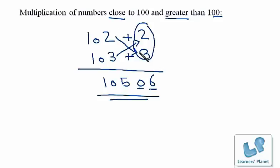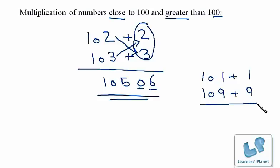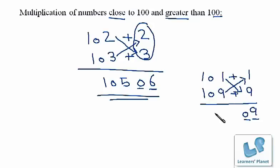Isn't it easy, friends? You just need to pay attention, learn what to do, and then practice to master this. Now let us take another example: we will multiply 101 with 109. This is plus 1 and this is plus 9. Now 9 into 1 is 9, so we put a 0 to fill two digits, making it 09. We can add 9 to 101 or 1 to 109, and we get 110. So the multiplication of 101 and 109 is 11009.